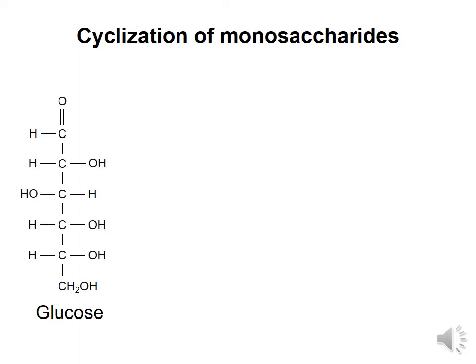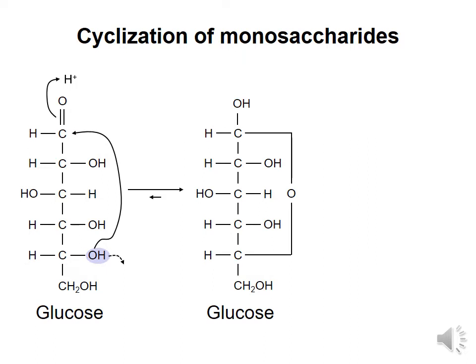Let's use glucose as an example. Cyclic structures form when a hydroxyl group, usually the one on the highest numbered chiral carbon, performs a nucleophilic attack on the carbon of the carbonyl group. The hydroxyl loses a proton to the aqueous environment, while the oxygen of the carbonyl picks up a proton to form an OH group. The result is a new carbon-oxygen bond and a structure with a six-membered ring — five carbons and one oxygen. This reaction is reversible, but the cyclic or ring form is favored.